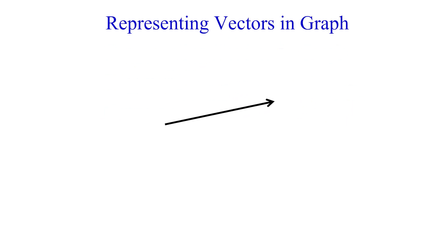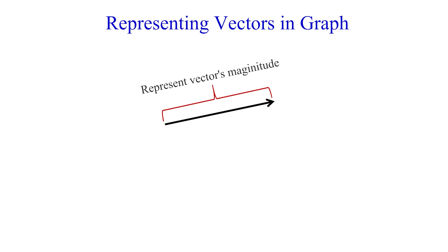Representing vectors in a graph. Vectors can be represented in a graph by an arrow, where the length of the arrow is proportional to the vector's magnitude, and the arrow's direction represents the vector's direction. Each vector must have a magnitude and a direction. The vector magnitude must be proportional to the vector quantity, and we achieve this by adopting a drawing scale.